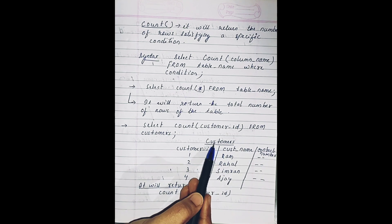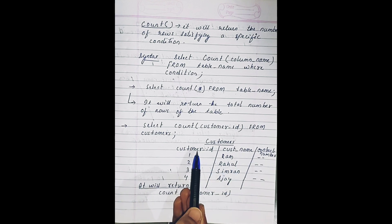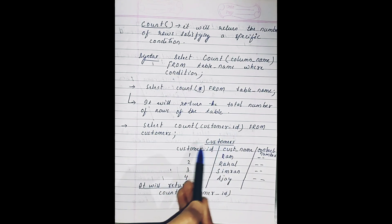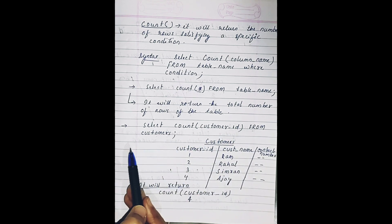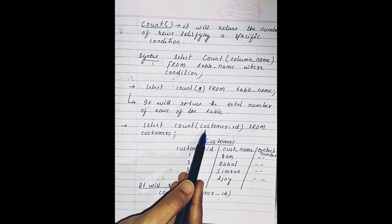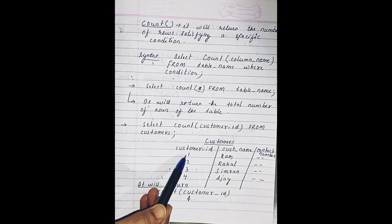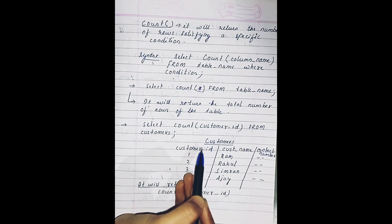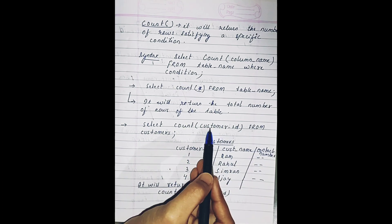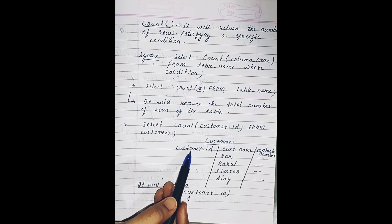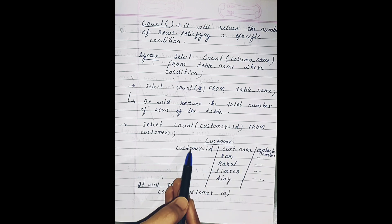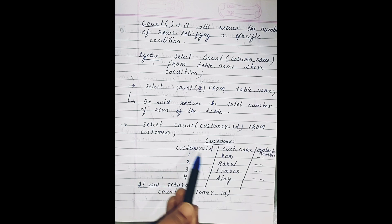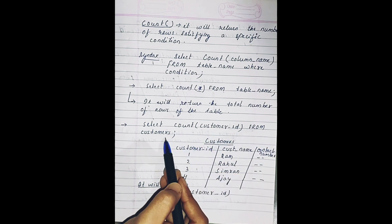Suppose there is a customer table having column names like customer ID, customer name, and contact number. If we write SELECT COUNT(customer_id) FROM customer, it will return the total number of rows having a customer ID — which is four. Similarly, SELECT COUNT(*) FROM customer, selecting all columns without any condition, will also return four, because there are four rows in total satisfying all those column names.